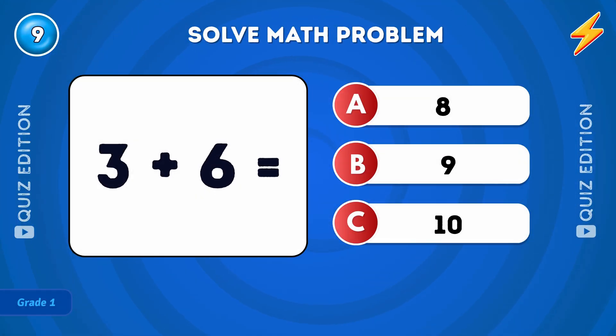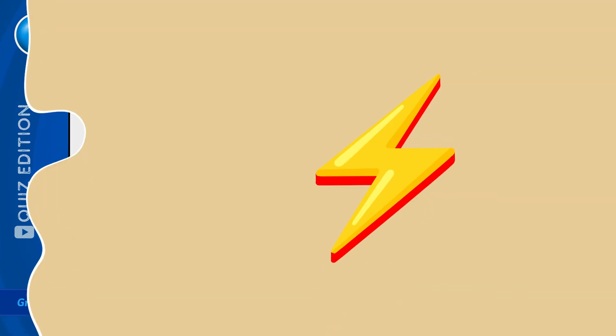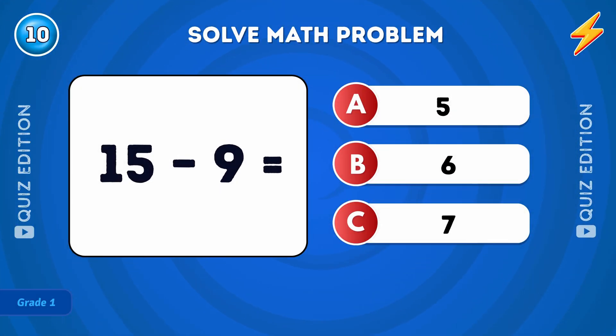What is 3 plus 6? The answer is 9. What is 15 minus 9? The answer is 6.